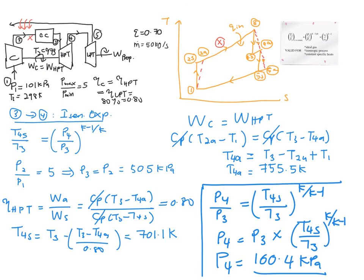We can check whether we are on the right track. P1 is 101 kilopascals — the lowest pressure. The highest pressure is P2 equals P3 equals 505 kilopascals. The intermediate pressure P4 should fall between these two values, and 160.4 kilopascals is indeed higher than P1 but lower than P2 and P3, confirming we are in the correct range.